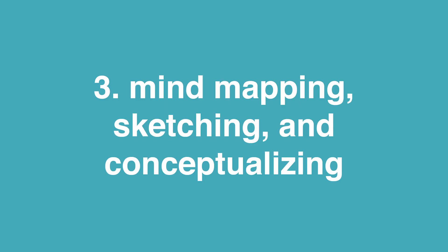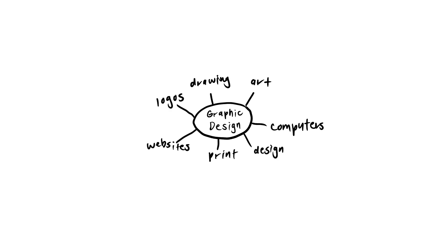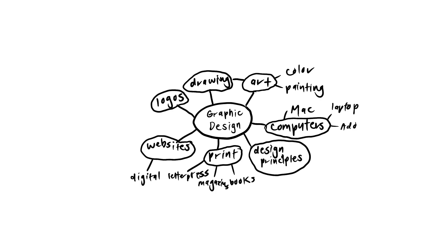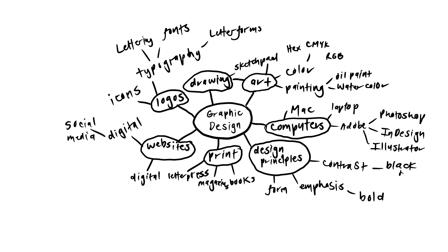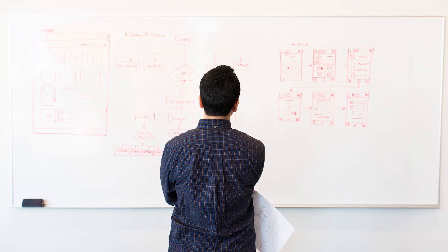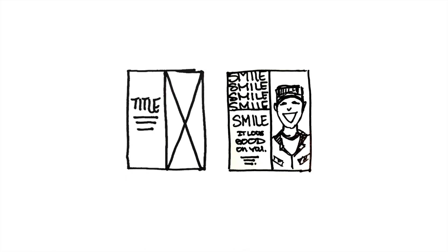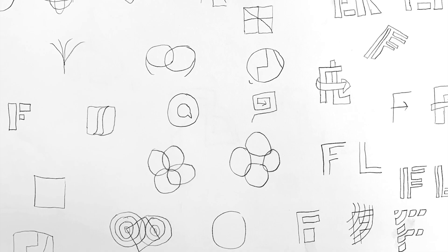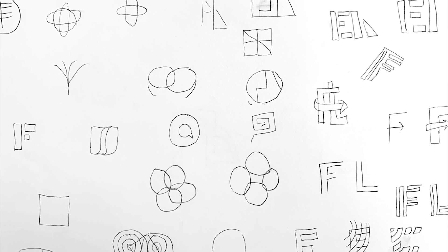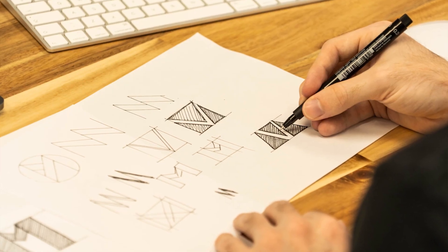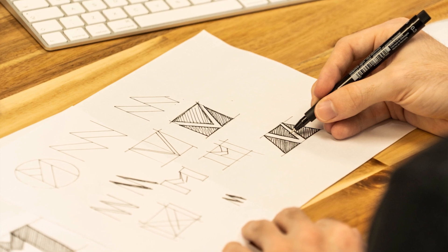Step three of the creative process is mind mapping, sketching, and conceptualization. This phase is where you take the research you've conducted so far, take those ideas, get them out of your head, and onto paper. I love to start with a mind map — it provides a structured way to generate ideas and get information for your project. Sketching is a great way to generate quick ideas and thumbnails to help get visual ideas out on paper to see if they work. Sketches are just initial ideas that pop into your head — you don't need to be an artist to sketch.